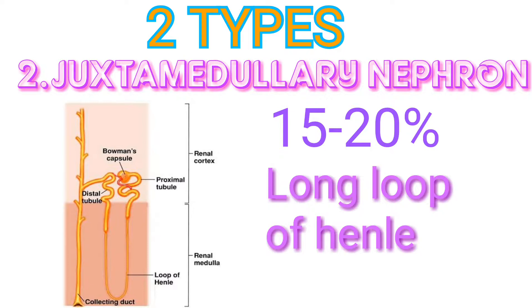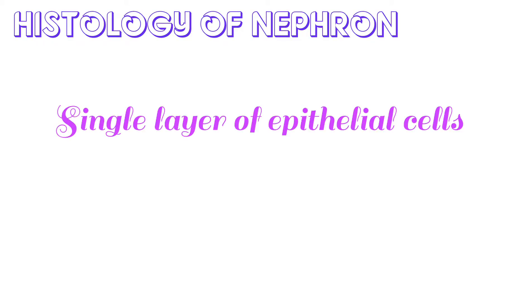Now let's look at the details of the histology of the nephron. A single layer of epithelial cells forms the entire wall of the glomerular capsule, renal tubule, and ducts. However, each part is distinct with different functions.